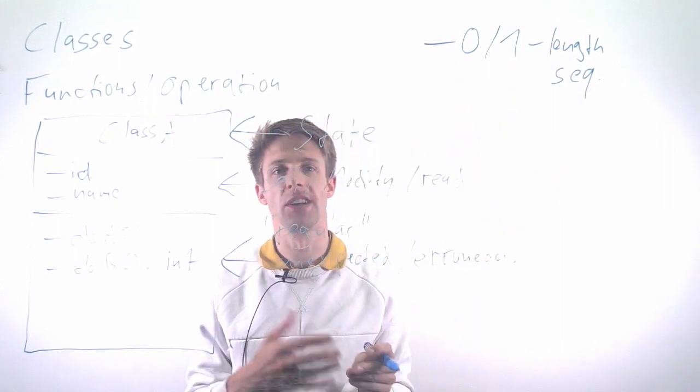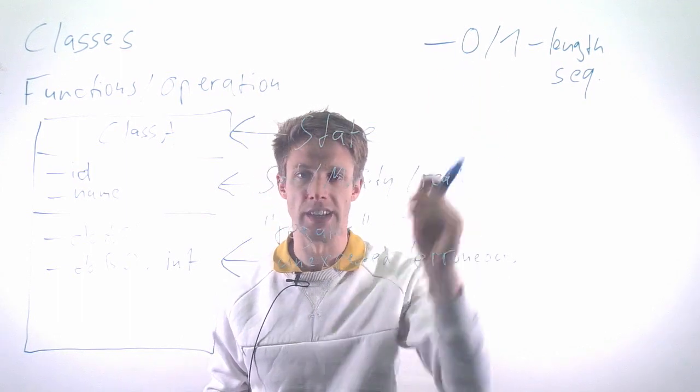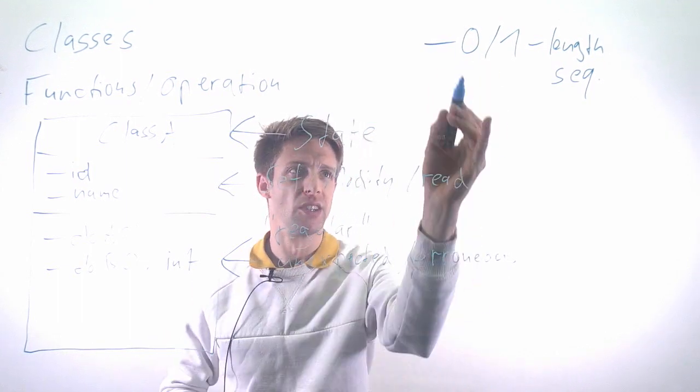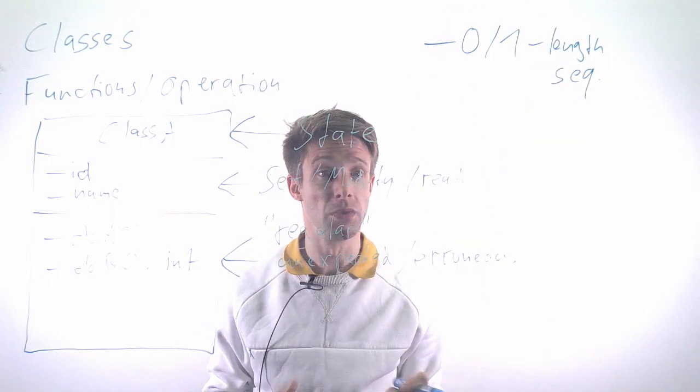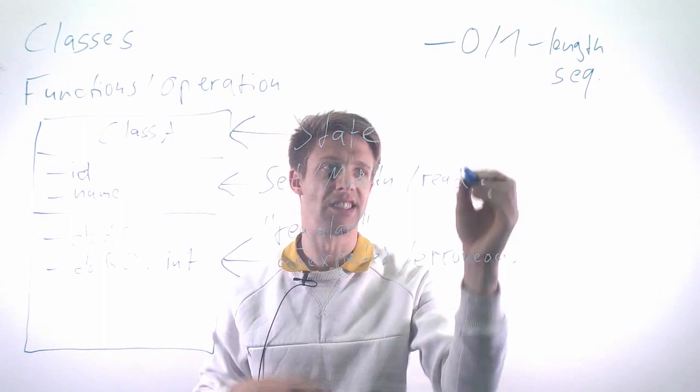For example, in the code you might access the first element without even checking that there is one. By writing tests that include these cases, you very often find errors. That's a heuristic based on typical mistakes that happen.